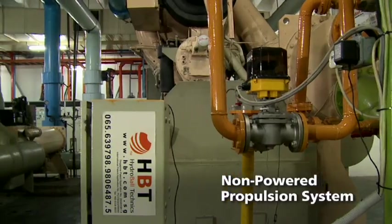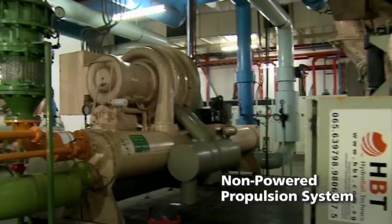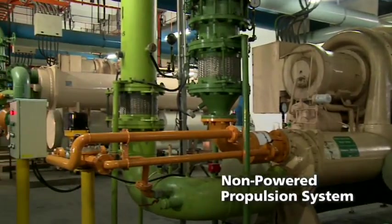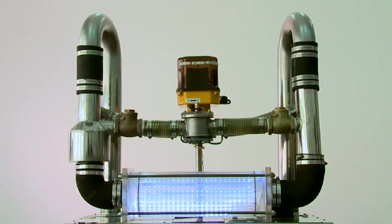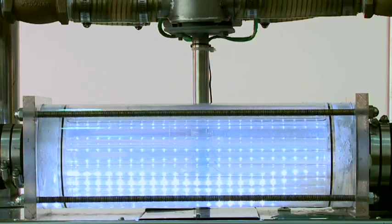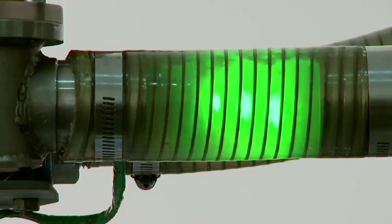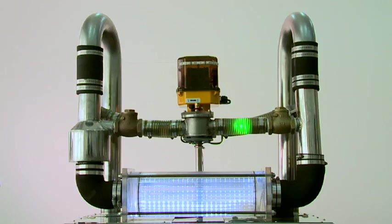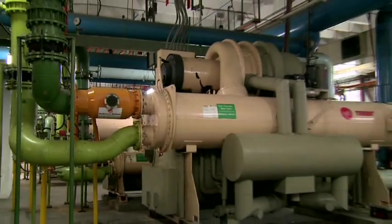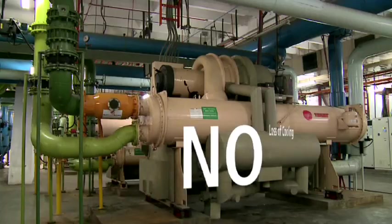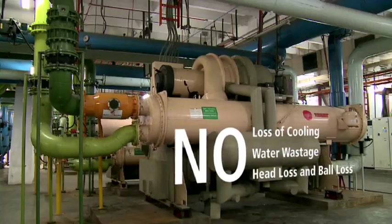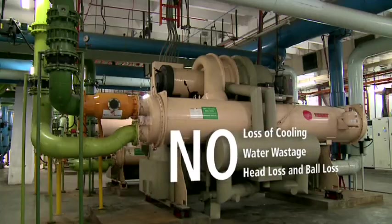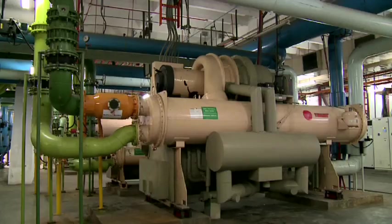The non-powered Hydroball system does not require any prime movers like pumps, compressors and diverters to power its tube cleaning action. It uses the energy from the existing flow to circulate cleaning valves through the chiller condenser tubes. It uses three innovative steps to curtail possible losses when a tube cleaning system is retrofitted onto an existing chiller plant.